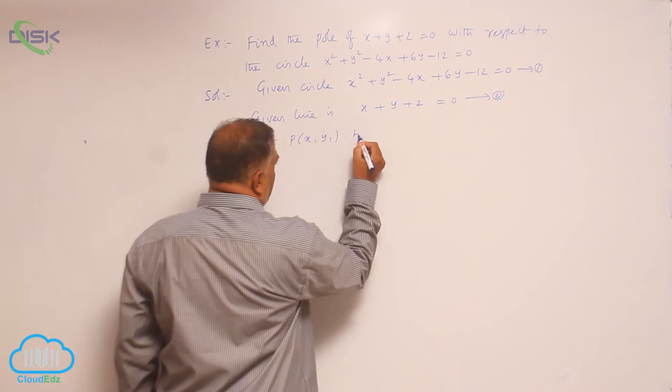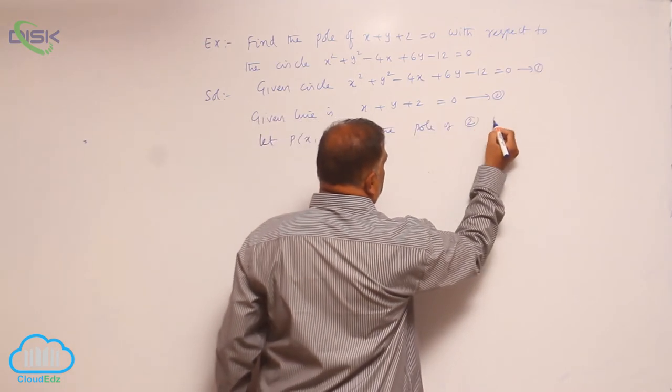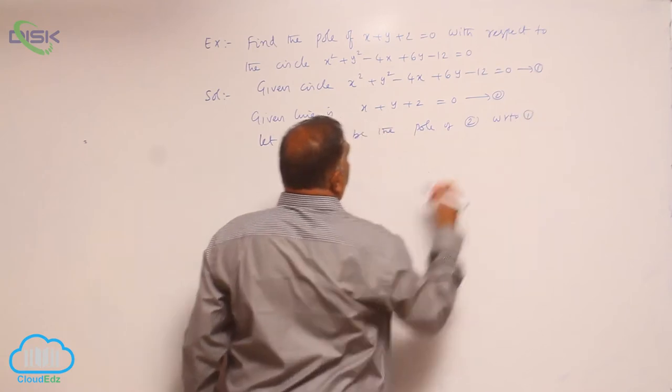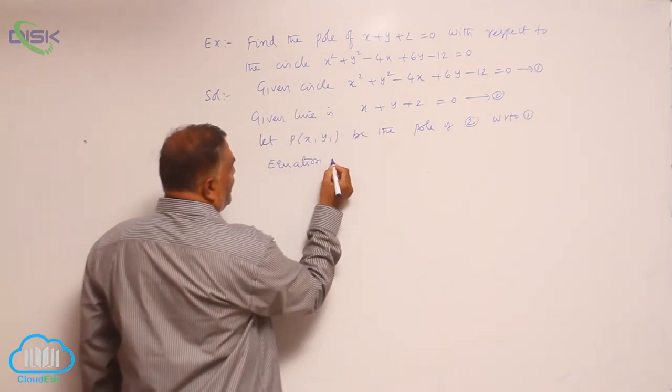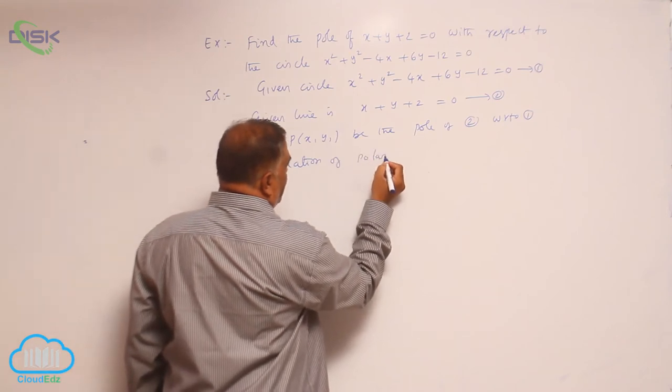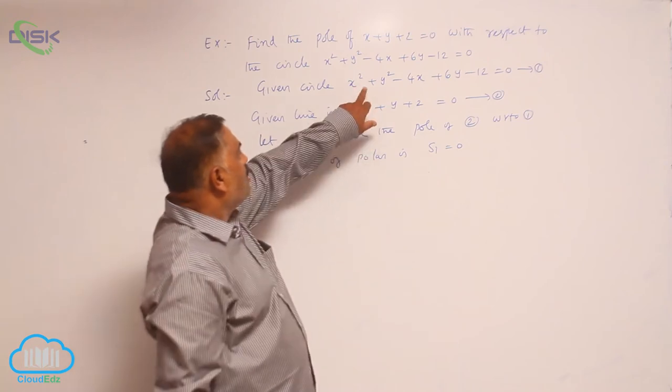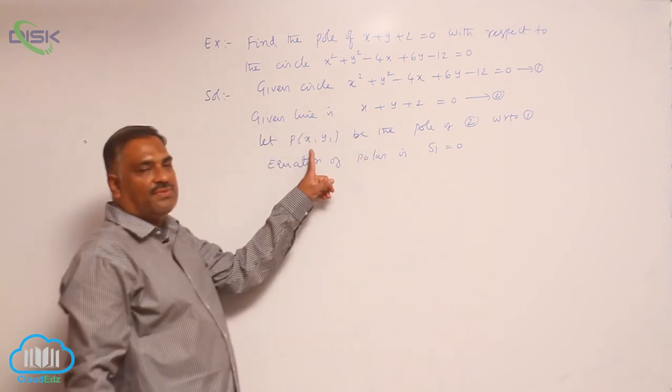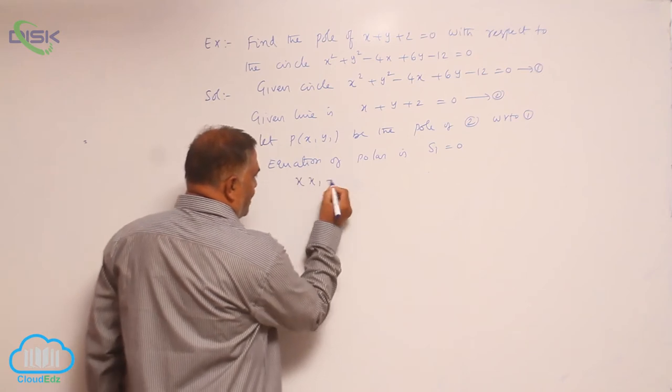So the equation of polar is S1 = 0. Take the circle equation P(x1, y1), write the polar equation: that is x·x1 + y·y1 - 2(x + x1) + 3(y + y1) - 12 = 0.